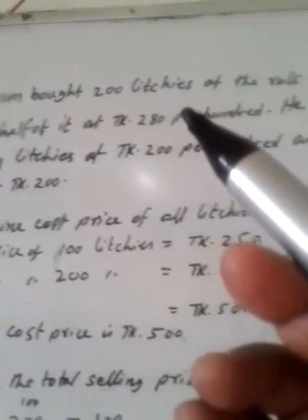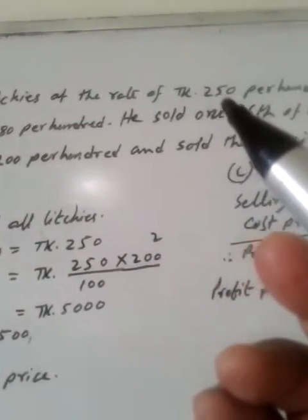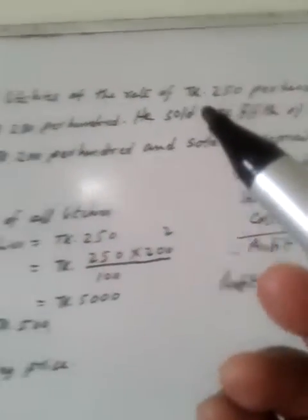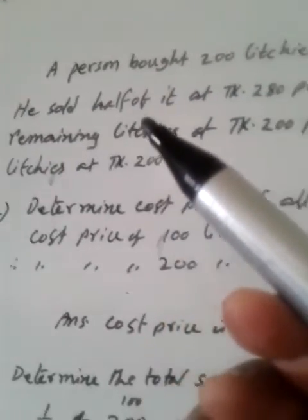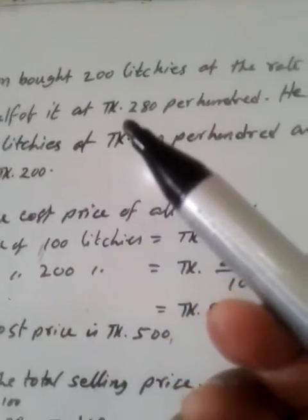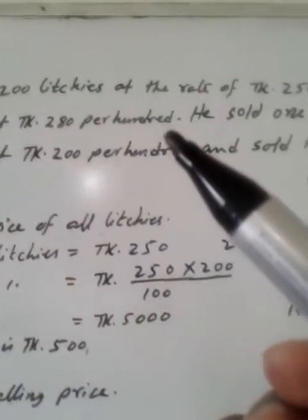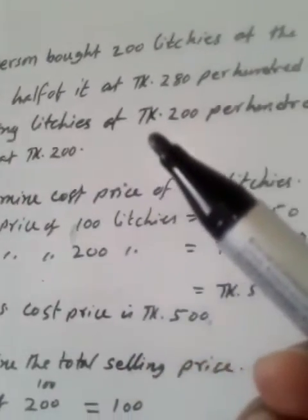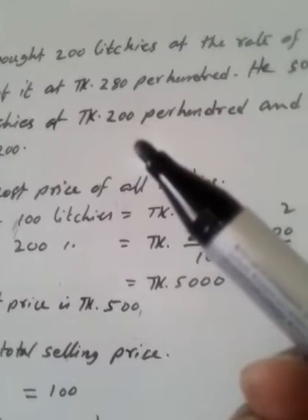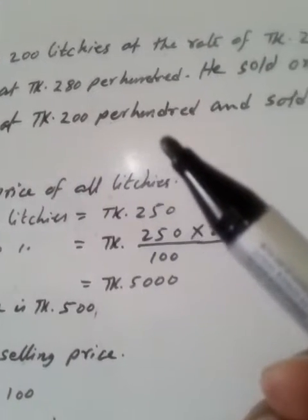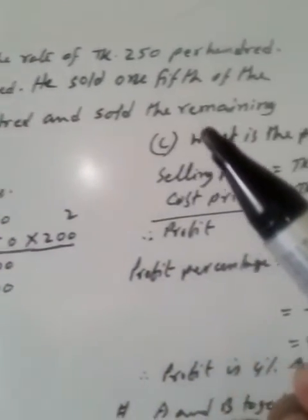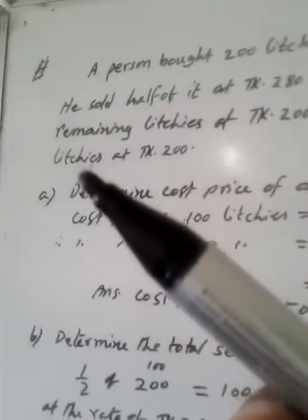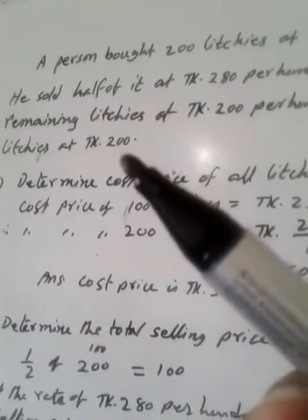A person bought 200 litchis at the rate of Taka 250 per 100. He sold half of it at Taka 280 per 100, one-fifth of the remaining litchis at Taka 200 per 100, and sold the remaining litchis at Taka 200.